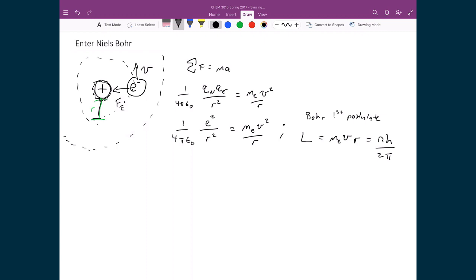So what we're going to do is we're going to rearrange this and solve for the velocity. So we're just looking at this part right here. We're going to solve for the velocity, which means that v is equal to n h over 2 pi times, or divided by the mass of the electron, divided by the radius of the orbit. And we're going to take that value, this value of v, and we're going to stick it back into here.